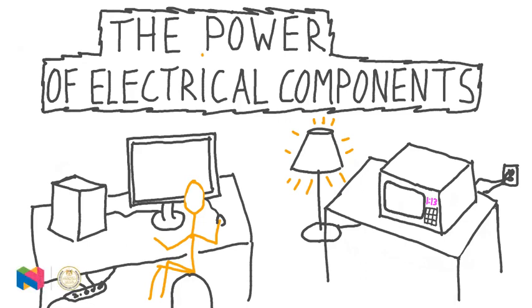In this video, we're learning about the power of electrical components. This kind of power is not always the easiest thing to notice. After all, electrical components, like a computer or a lamp or a microwave, are fairly stationary devices.